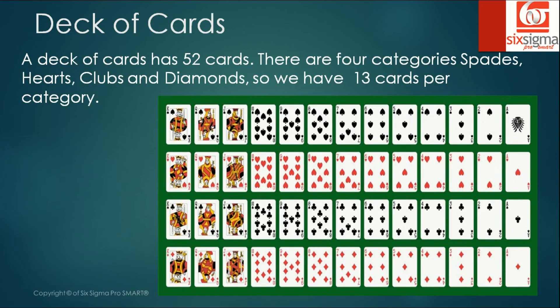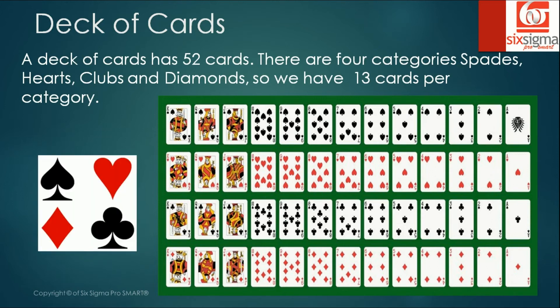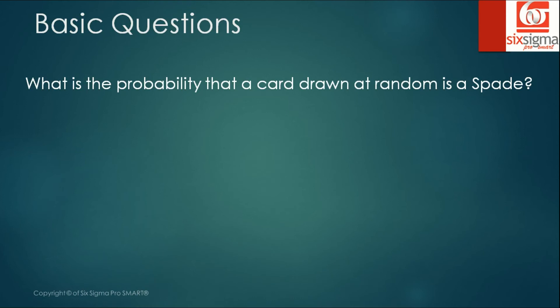Let us understand whatever we have covered so far with the help of an example from a deck of cards. As we all know, a deck of cards has 52 cards. There are four categories: spades, hearts, clubs and diamonds. And we have 13 cards per category.